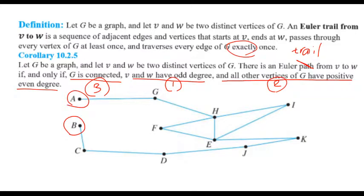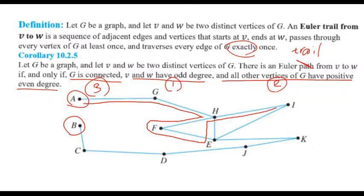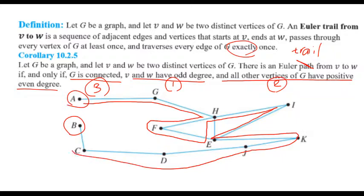Here is the Euler trail: from A, go to G, then G to H, H to F, F to E, E to H, H to I, I to E, E to K, K to J, J to D, D to C, and finally C to B. This trail traverses every edge exactly once, confirming the Euler trail from A to B.